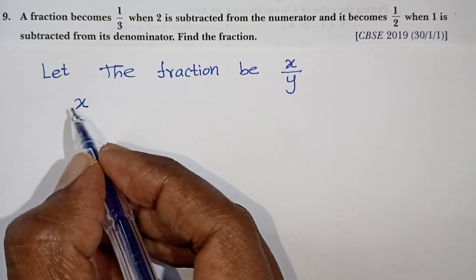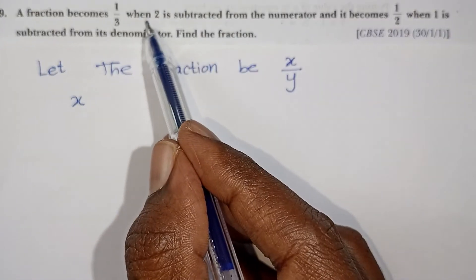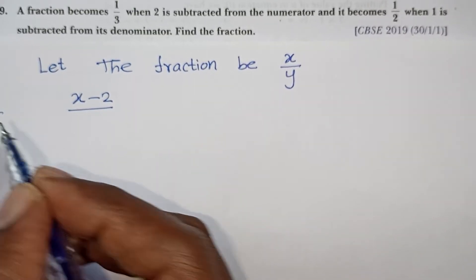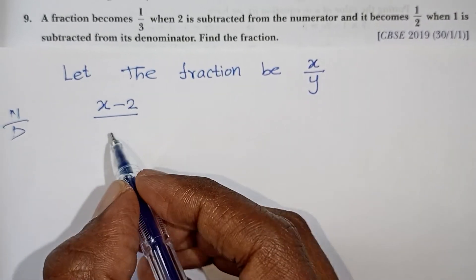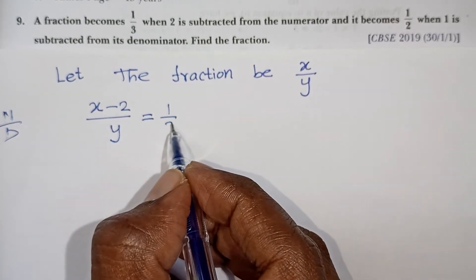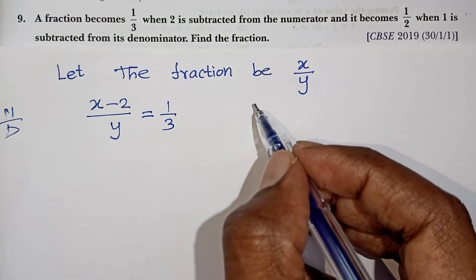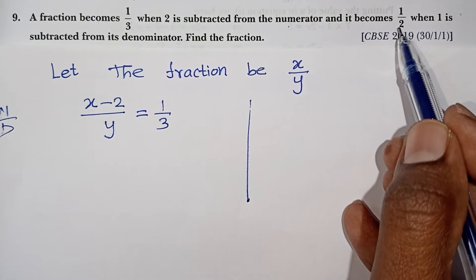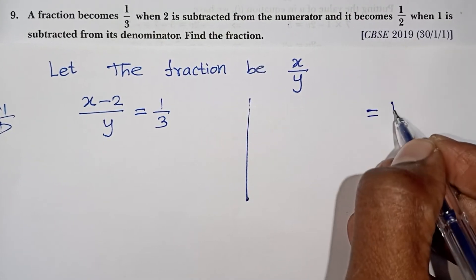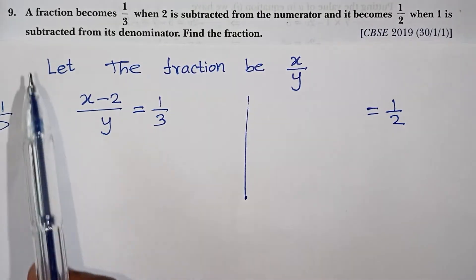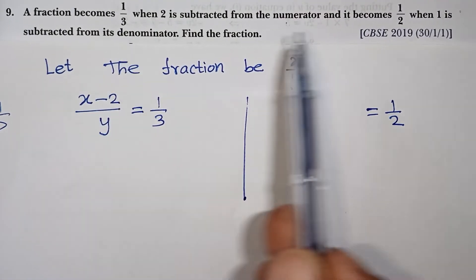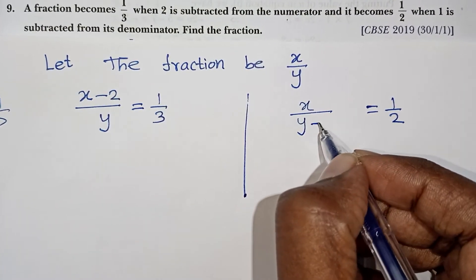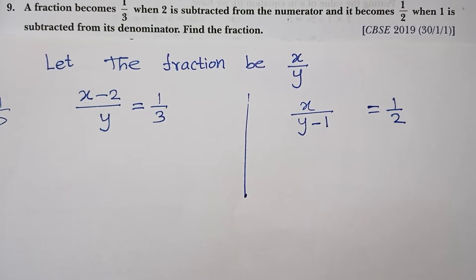Let the fraction be x by y. When 2 is subtracted from the numerator, the fraction becomes 1 by 3. So x minus 2 over y equals 1 by 3. When 1 is subtracted from the denominator, x over y minus 1 equals 1 by 2.